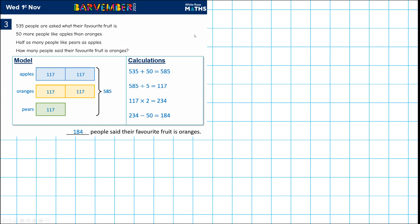So 535 people are asked what their favorite fruit is, it's the same question. 50 more like apples than oranges, half as many like pears as apples. It's the same question, but it looks quite different.